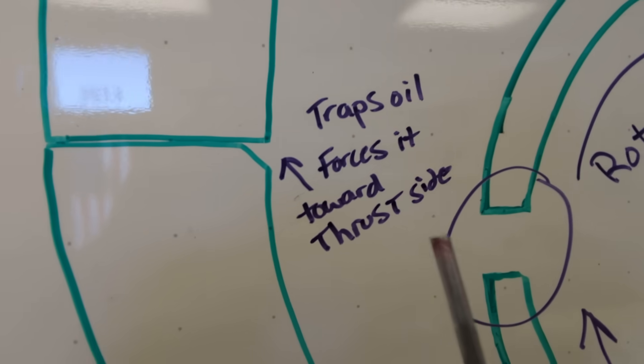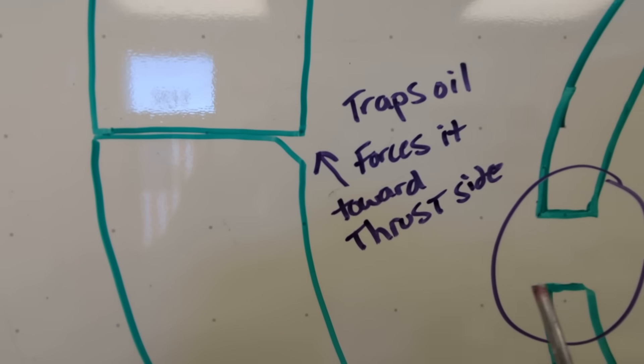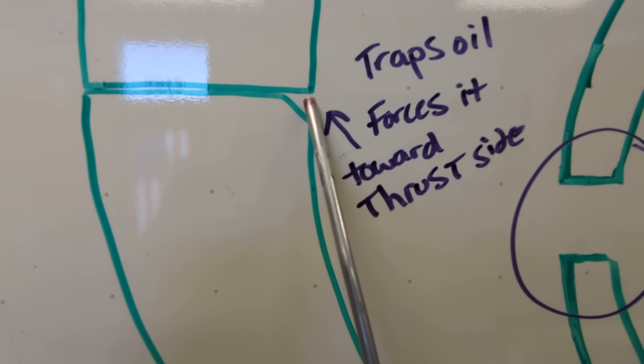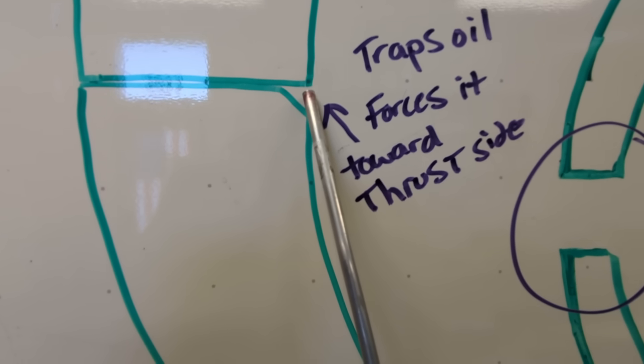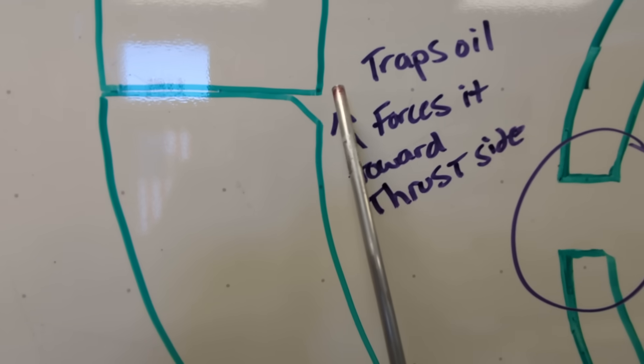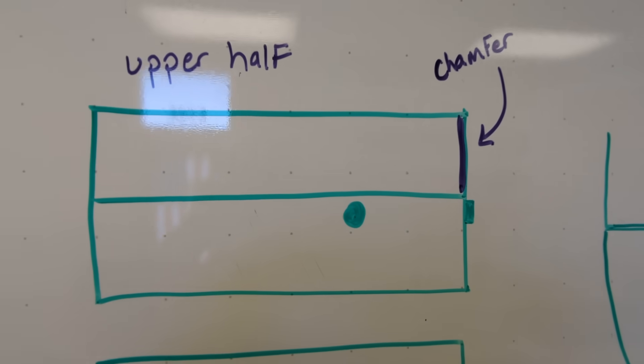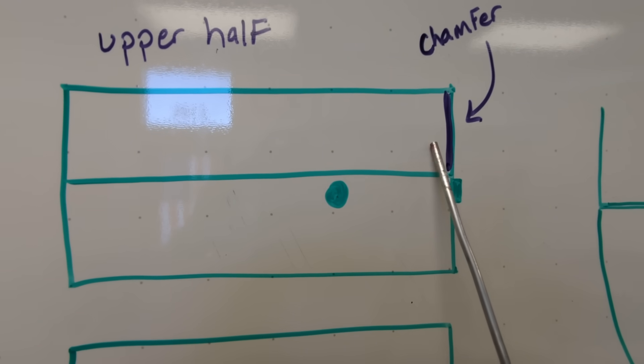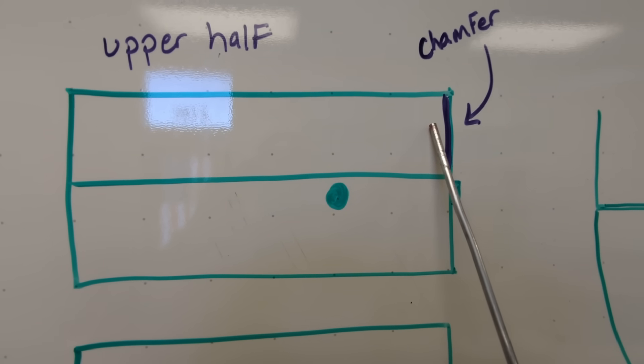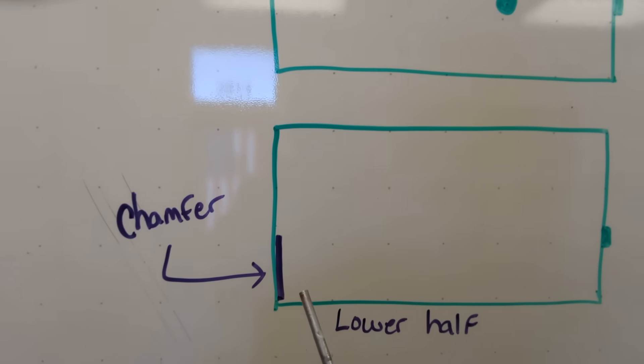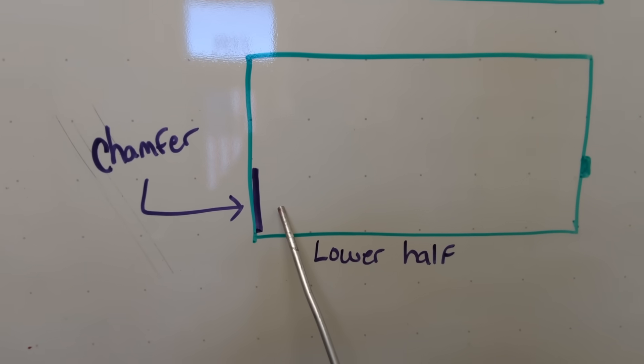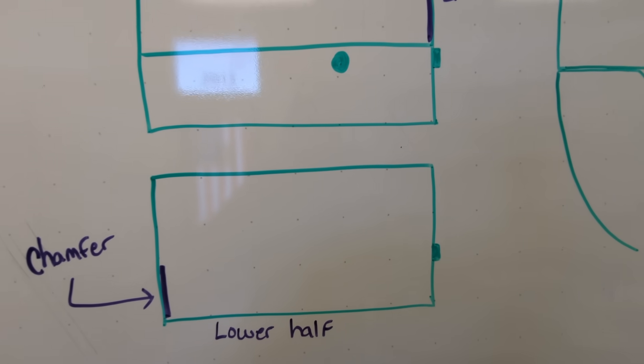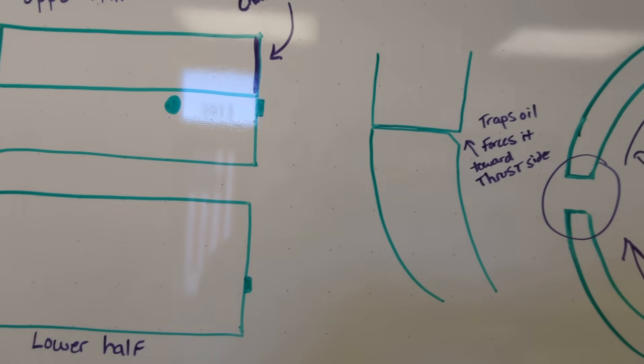What happens when you do that is as this crank rotates with oil pressure being applied to it, the crank rotates, the oil is traveling with it, it gets trapped right here and it forces oil fore or aft. Let's look at a top view of this bearing. We're going to cut a chamfer on one half of the bearing and then the opposite end of the lower half. I'm going to grab that bearing and show you what that's going to look like.